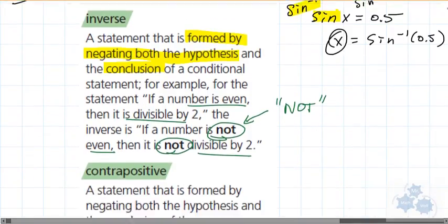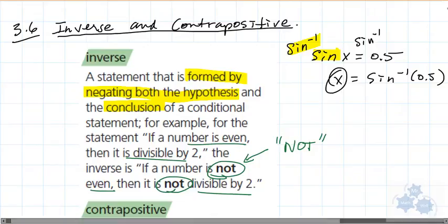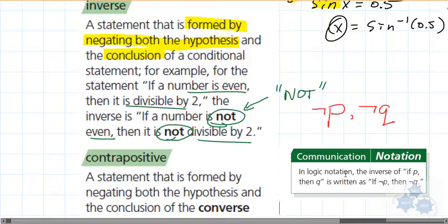The second thing we want to note here, before I go on, what's the notation? For an inverse, we say, this is the little symbol for inverse, not P, so if not the hypothesis, then not Q. So it's just kind of a little, you'll see that in your textbook there. So it looks like in your textbook right here is in logic notation. The inverse, if P, then Q is written, if not P, then not Q.